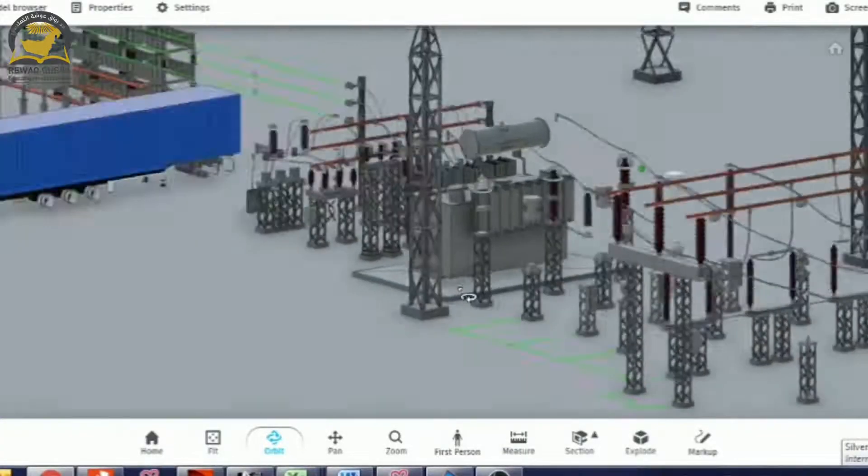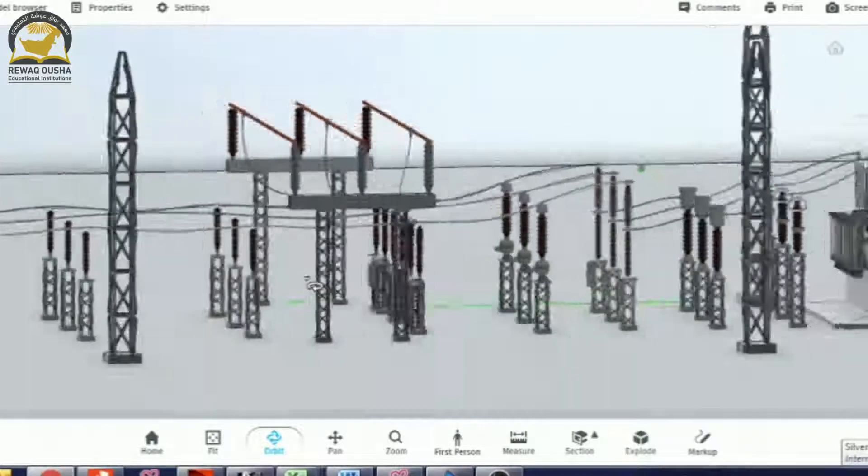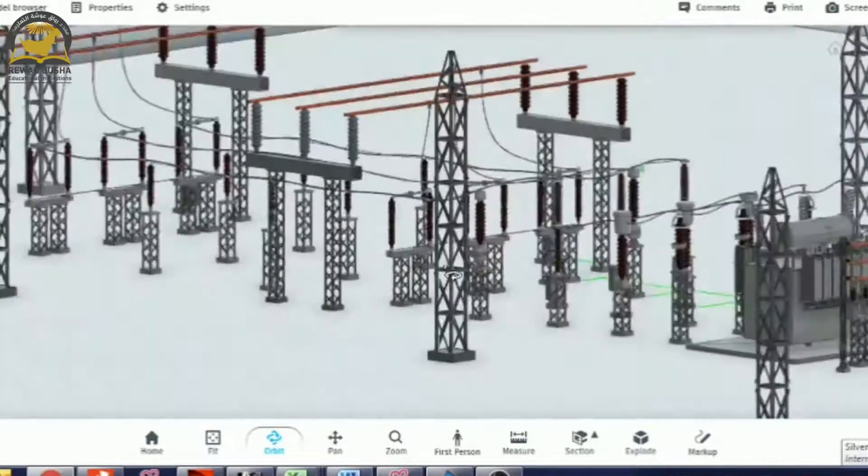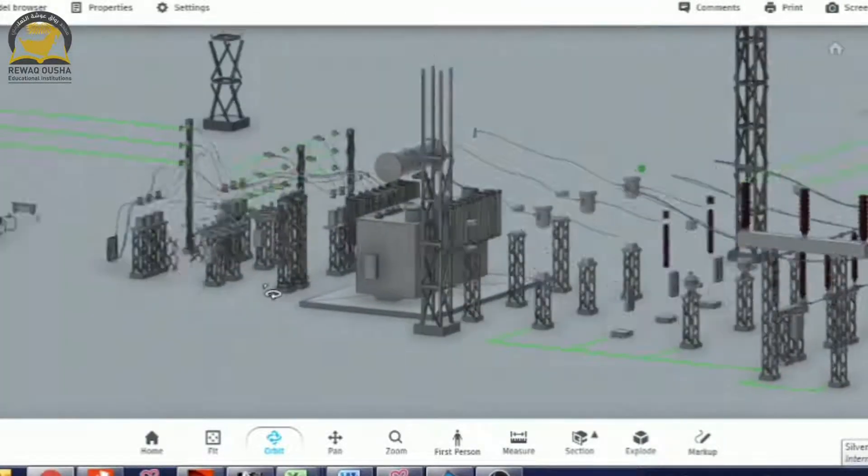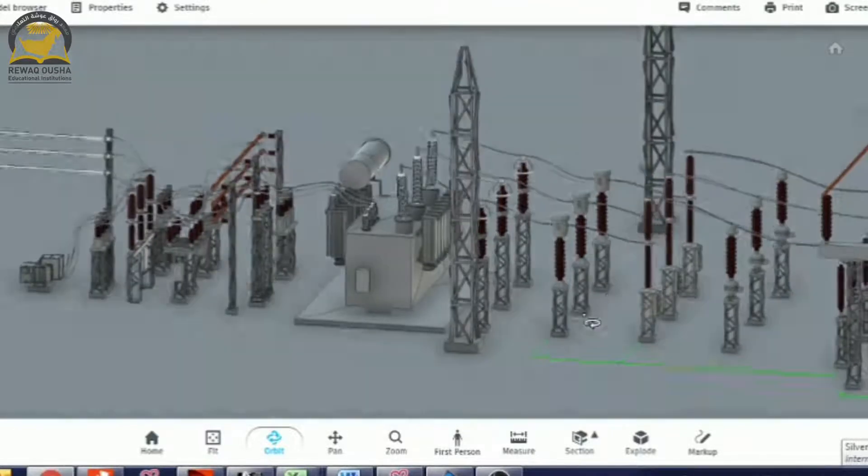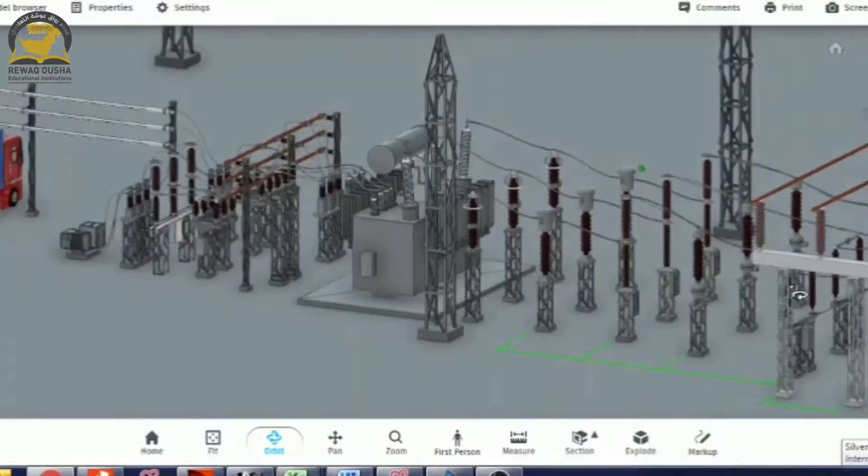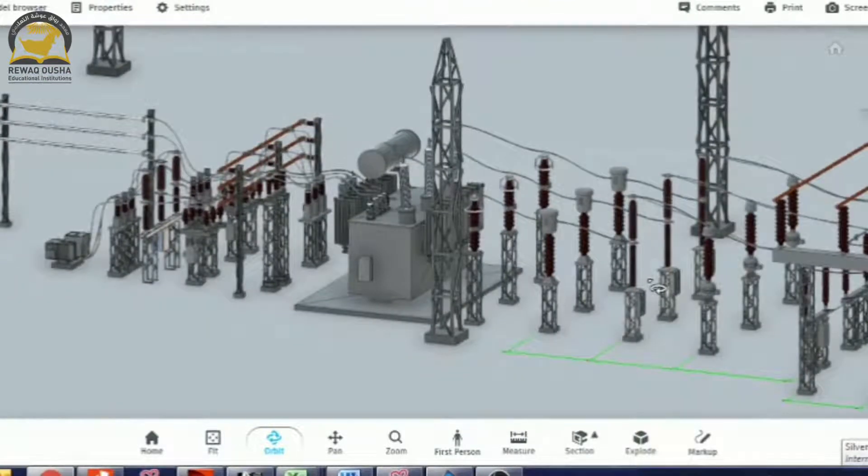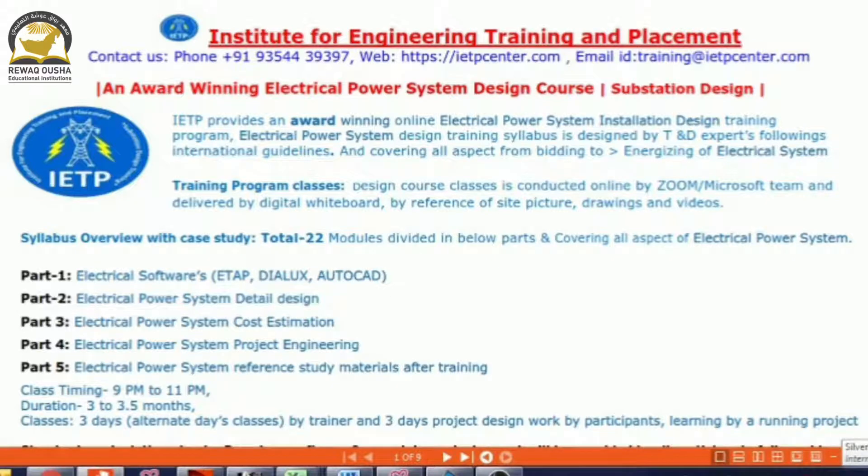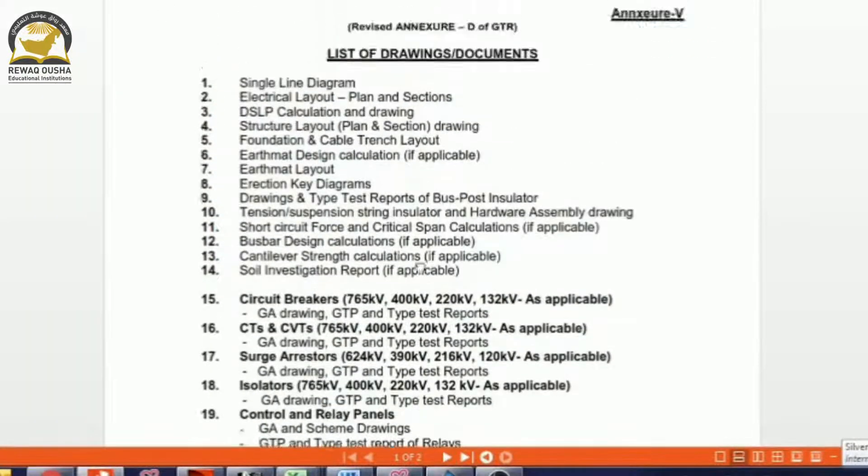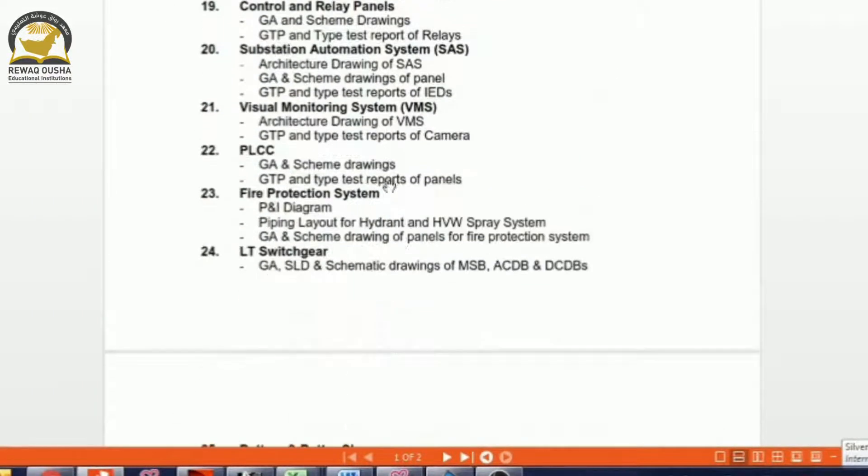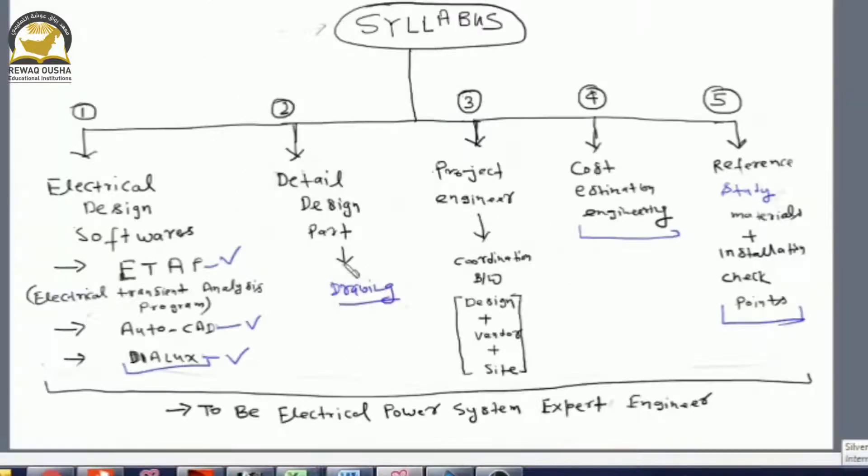Suppose we have this electrical installation, this 220 by 33 kilovolt surface station installation. So to install all this equipment, we need some construction drawings. Whatever construction drawings are required...